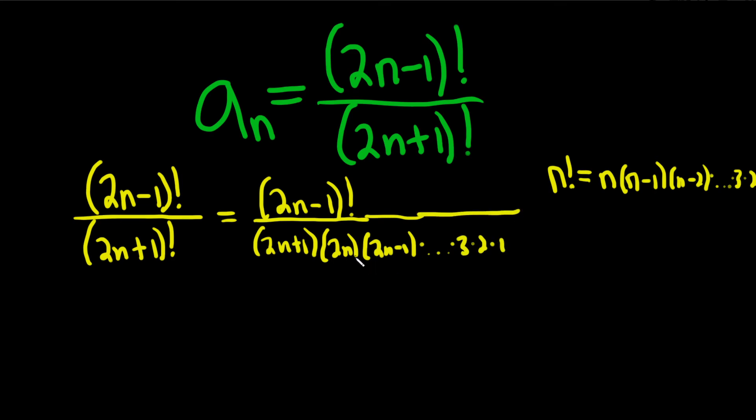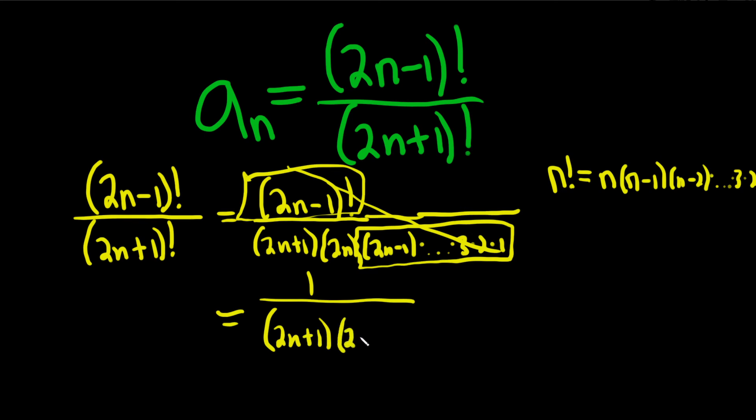The thing is though, this here is the same thing as this here, right? 2n minus 1 factorial is 2n minus 1 and the next one is 2n minus 2. I didn't write it, etc. So all of this goes away. So we're just left with 1 over 2n plus 1 times 2n. That's what we're left with.